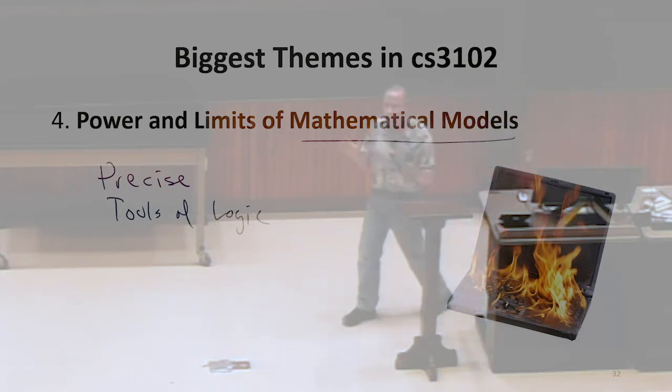Mathematical models are really powerful. They allow us to make things precise. They allow us to use all the tools of logic. Use all the tools of logic and formal reasoning to get really precise, strong, robust answers.